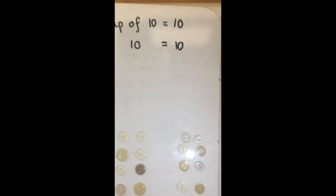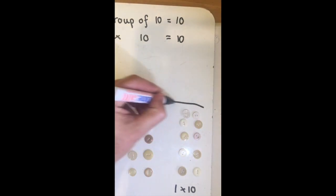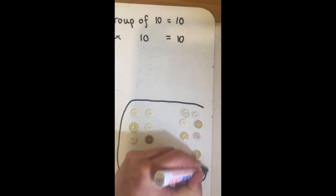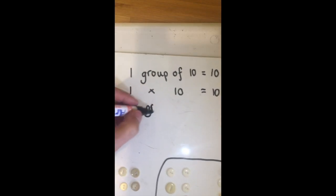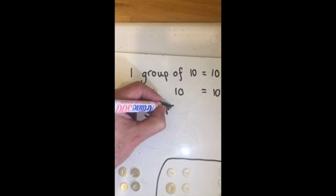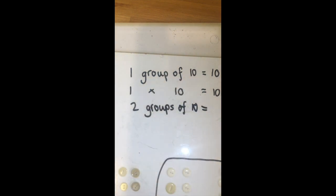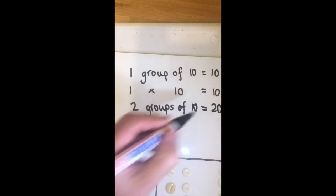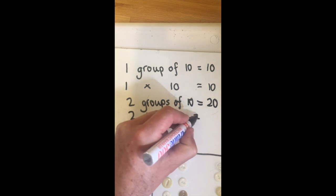Now if I look at these two groups, I've got two groups of ten equals, well we've got ten here and ten more. Ten and ten is twenty. Two groups of ten is twenty, or two times ten equals twenty.